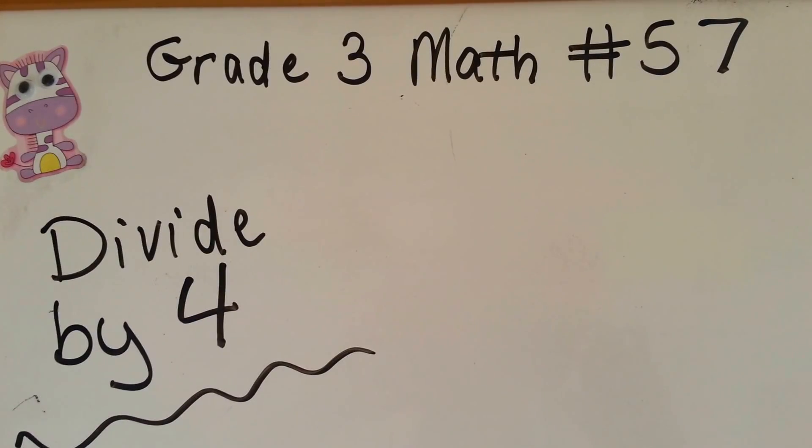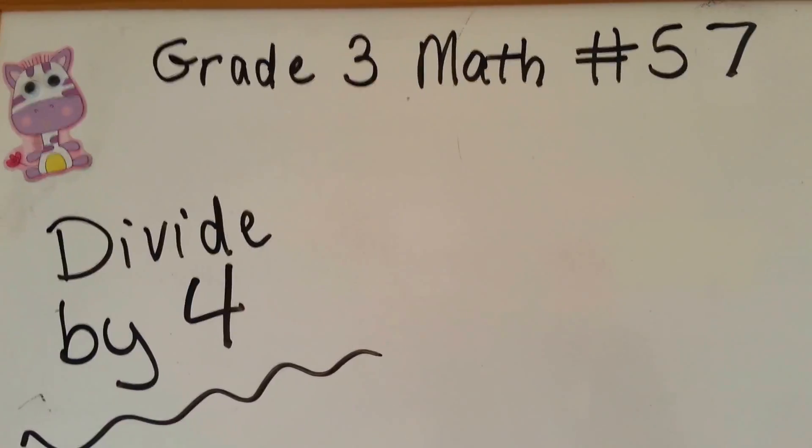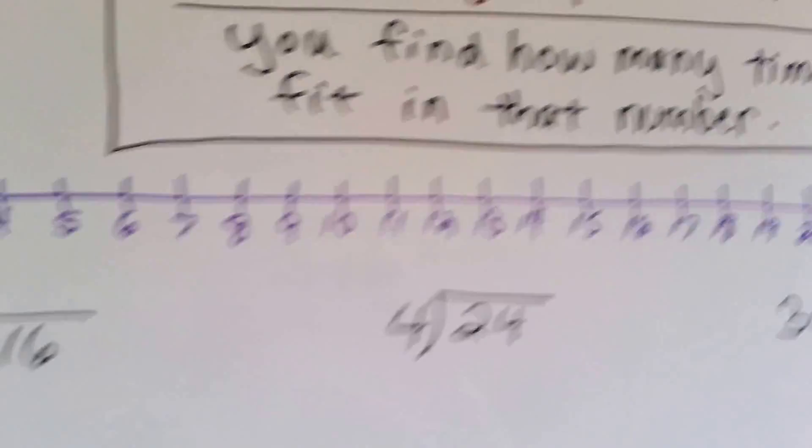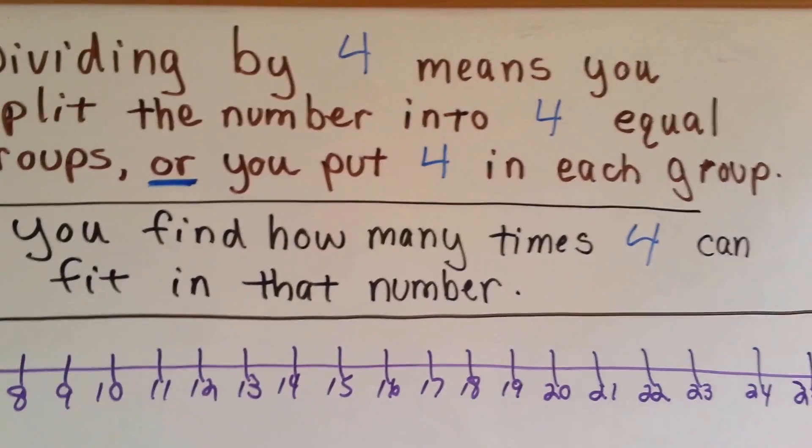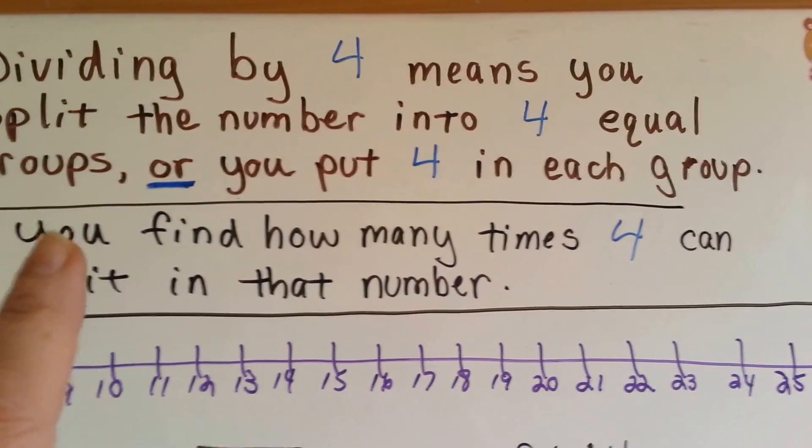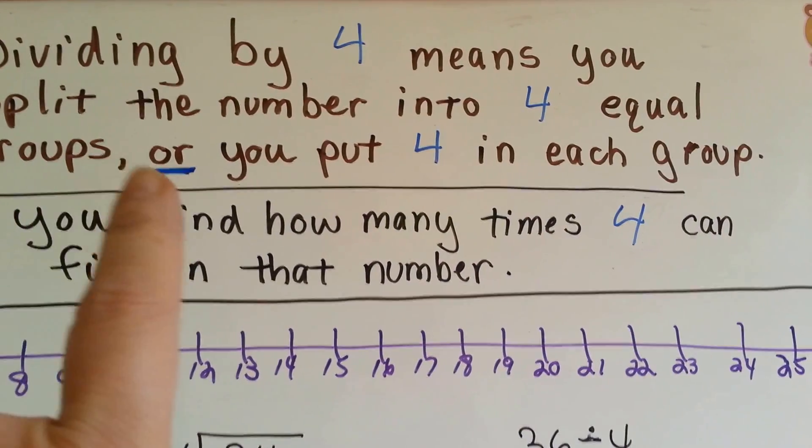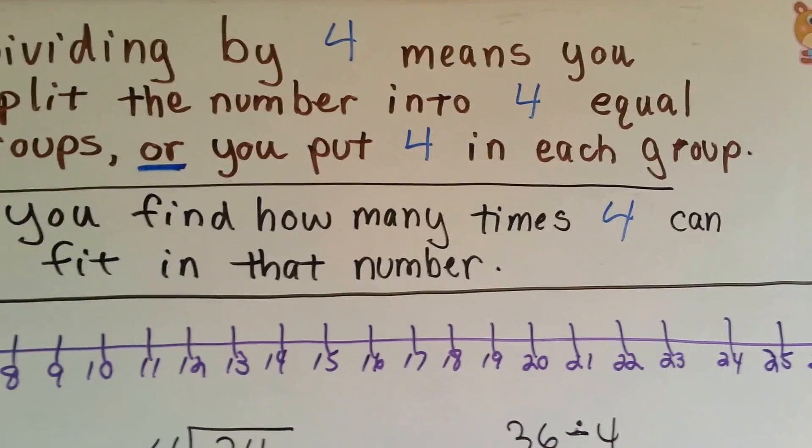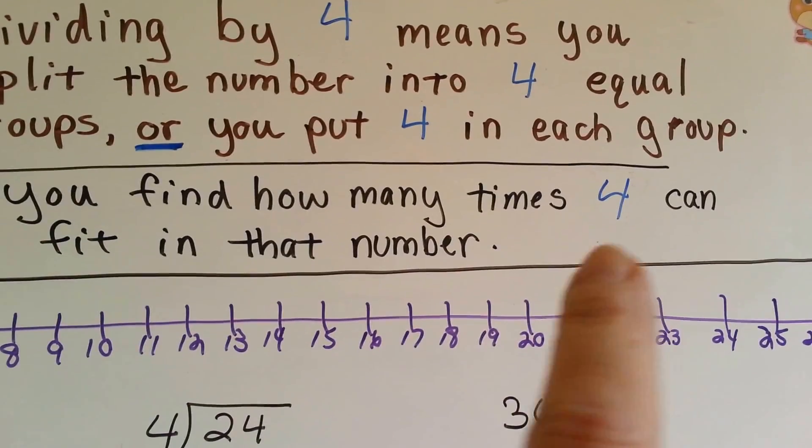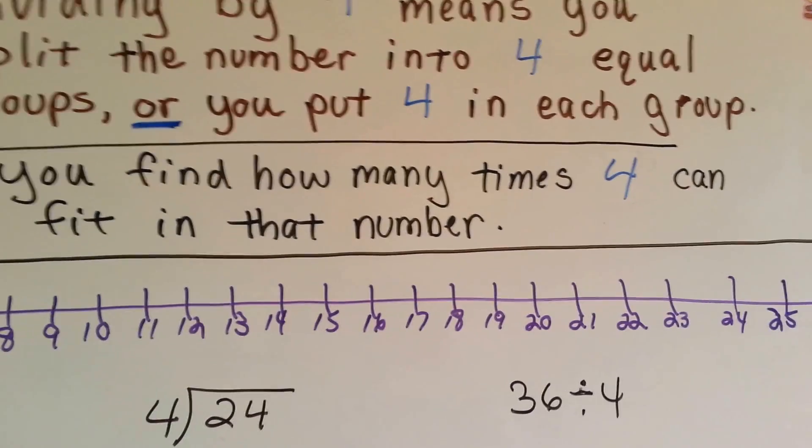Third grade math, number 57, divide by 4. So let's take a look here. Here's our rule. Dividing by 4 means you split the number into 4 equal groups or you put 4 in each group. You find out how many times 4 can fit into that number.